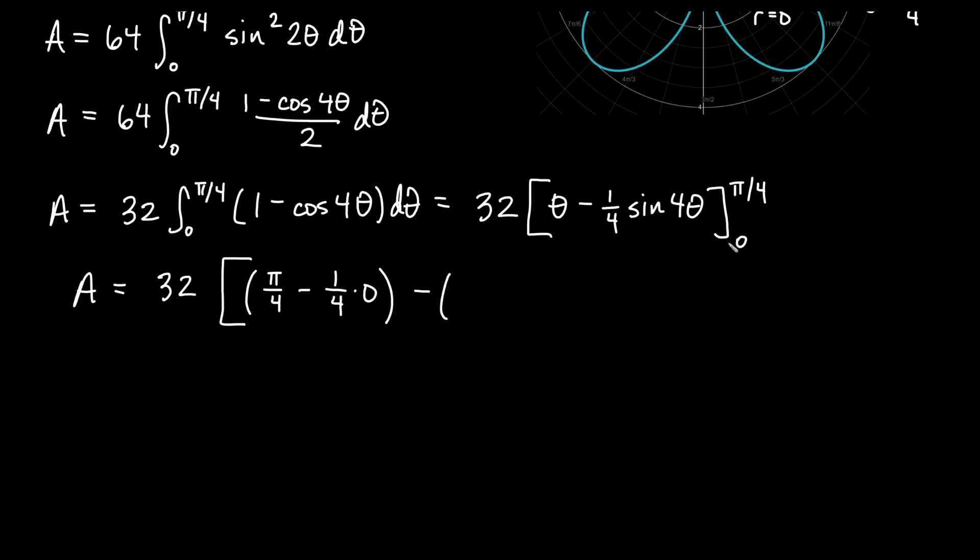Minus when we plug in zero. Plugging in zero for theta would give us zero there, minus one fourth times sine of 4 times zero would still be zero. So sine of zero, which is also zero. Looks like I get zero everywhere there. Actually, the only place I don't get zero is in this first term, right? So we get 32 times pi over four. 32 over four gives us an area of 8 pi inside my entire graph.